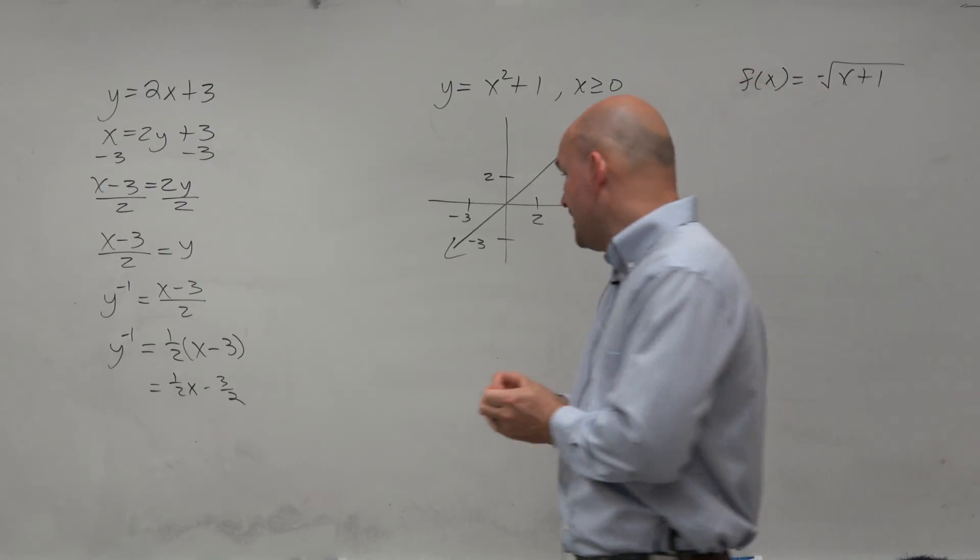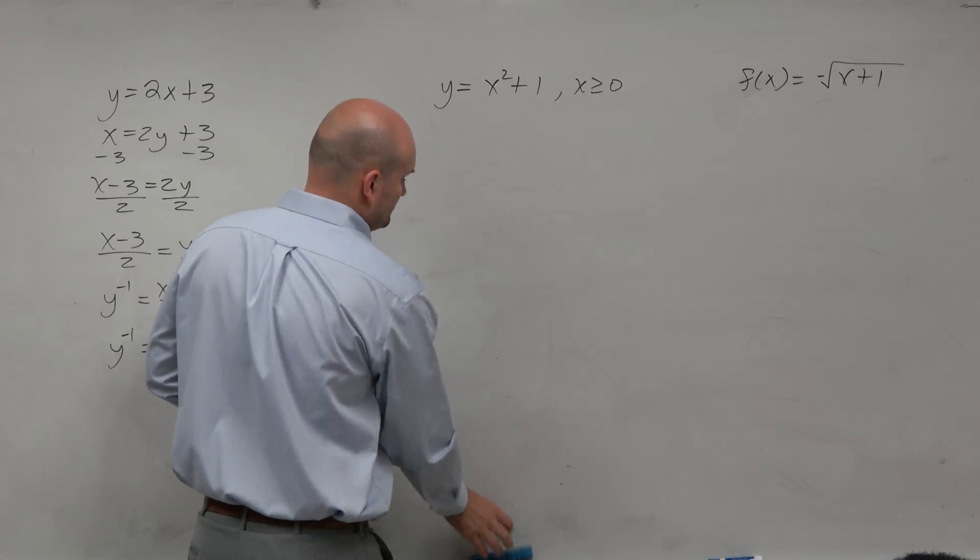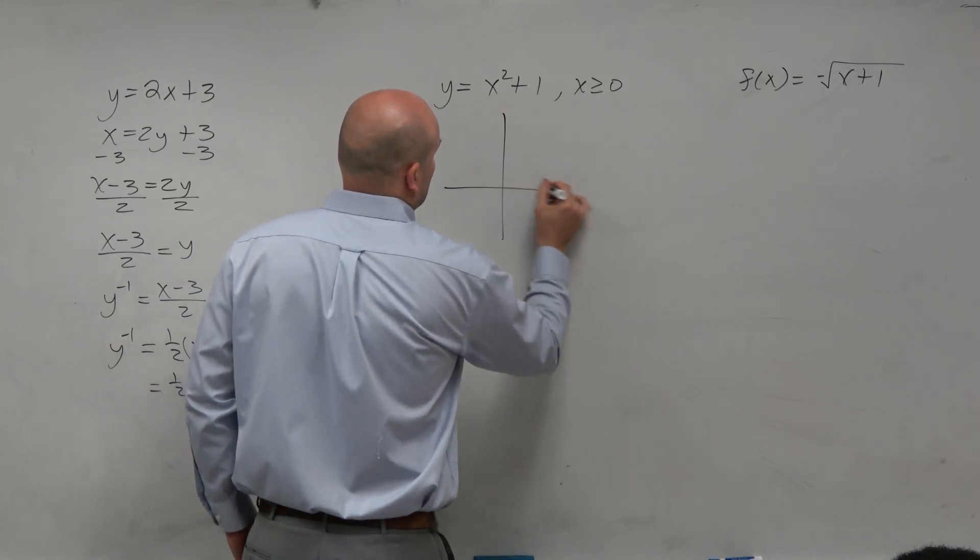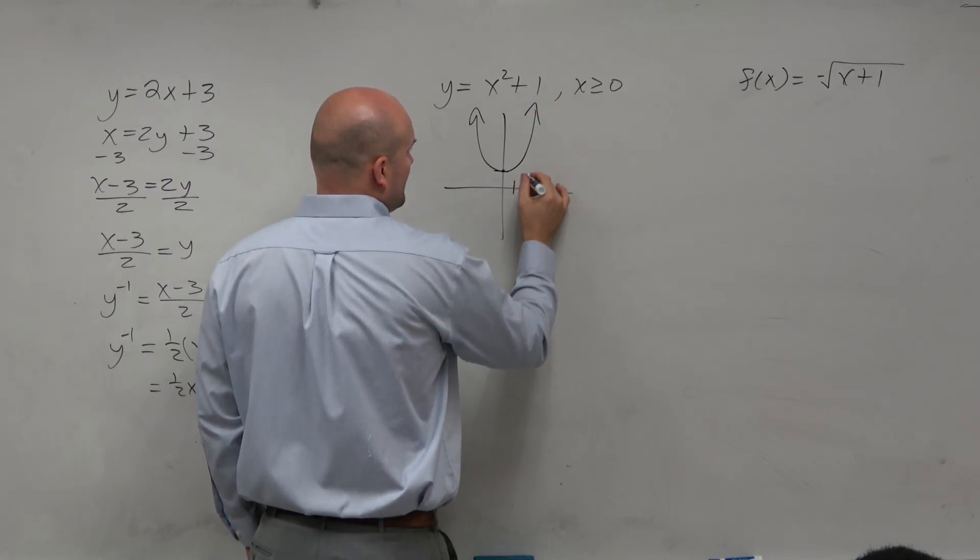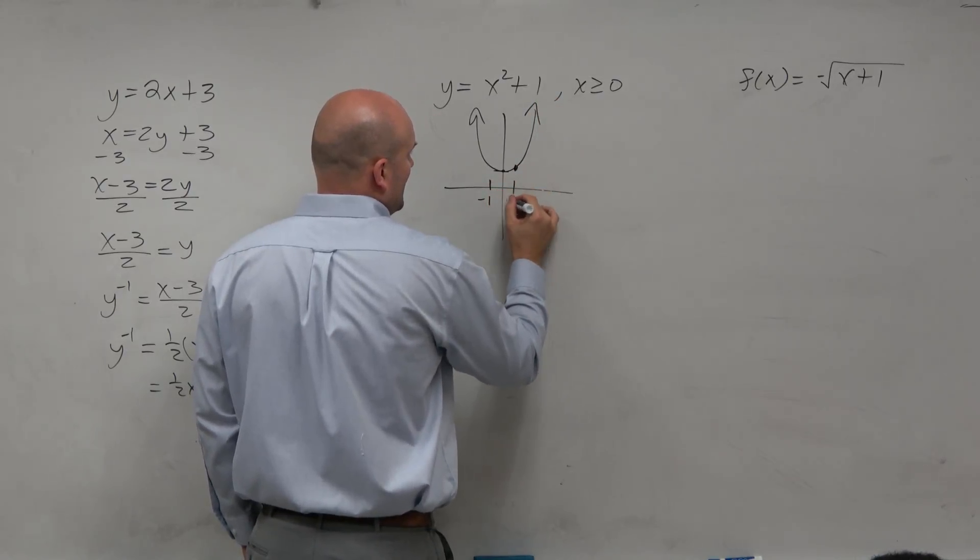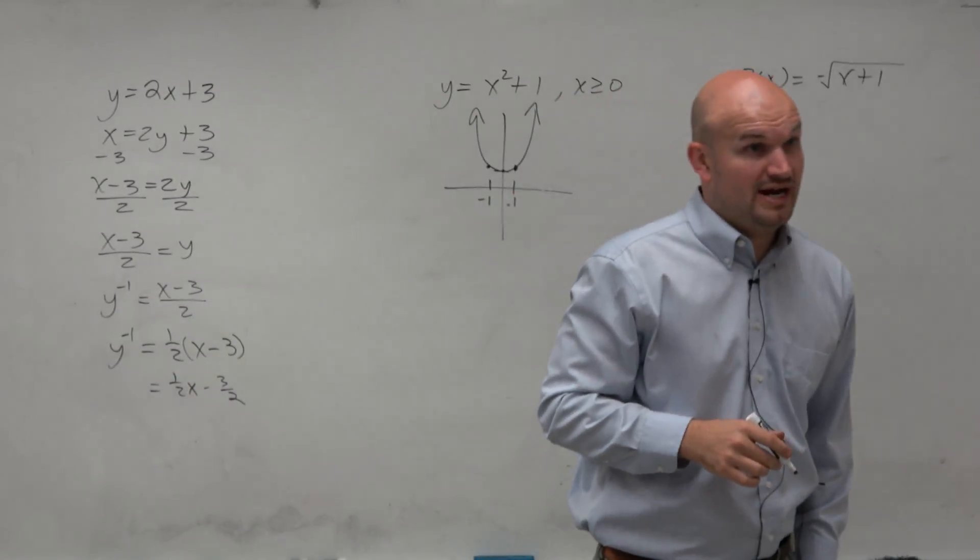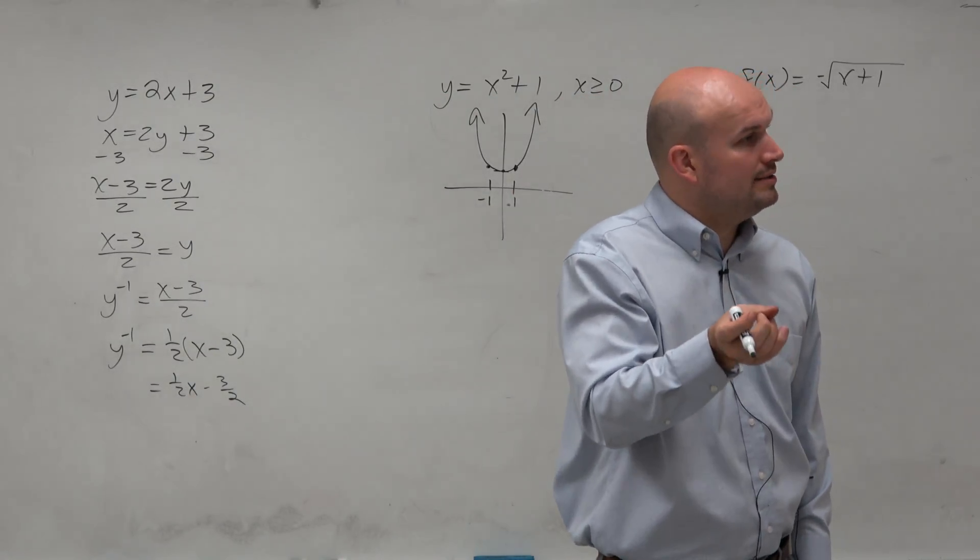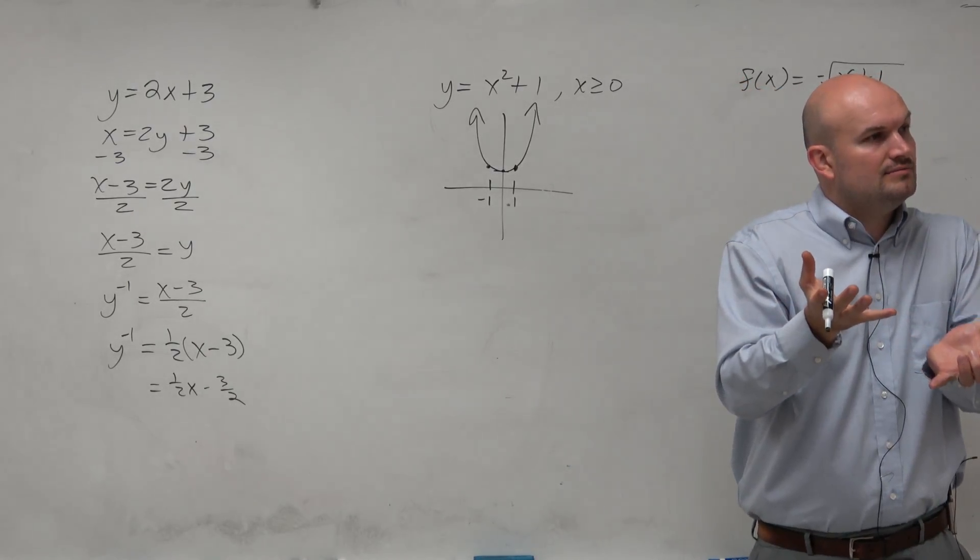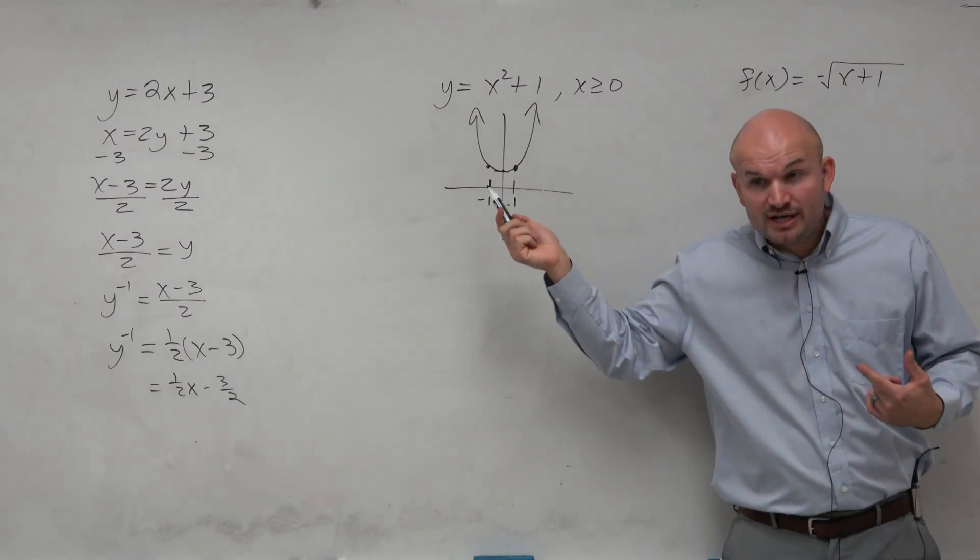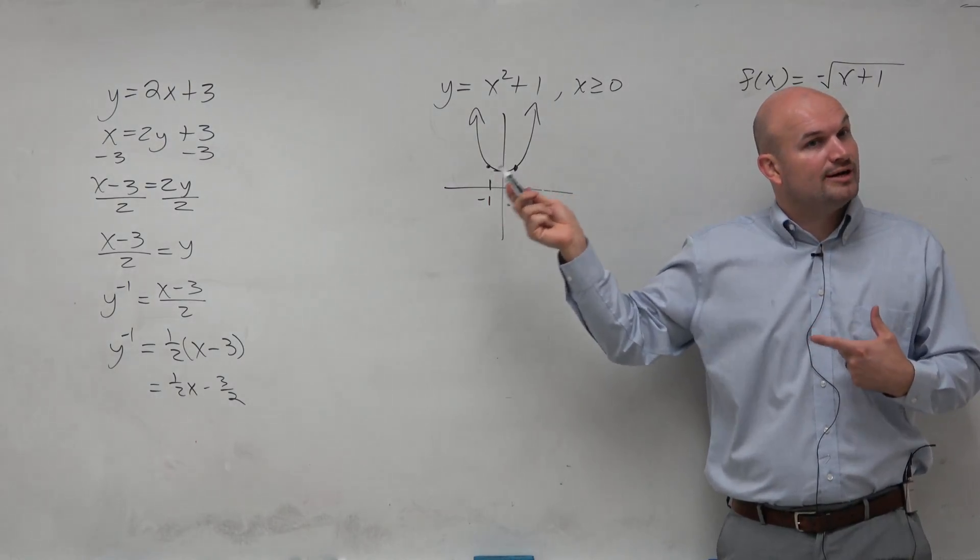So what comes into the problem here is when we graph x squared plus 1, you guys would agree that 1 and negative 1 have the same y value. So that's not considered 1 to 1. It has to be unique. Every x value, they cannot share a y value. All right, this is still a function.